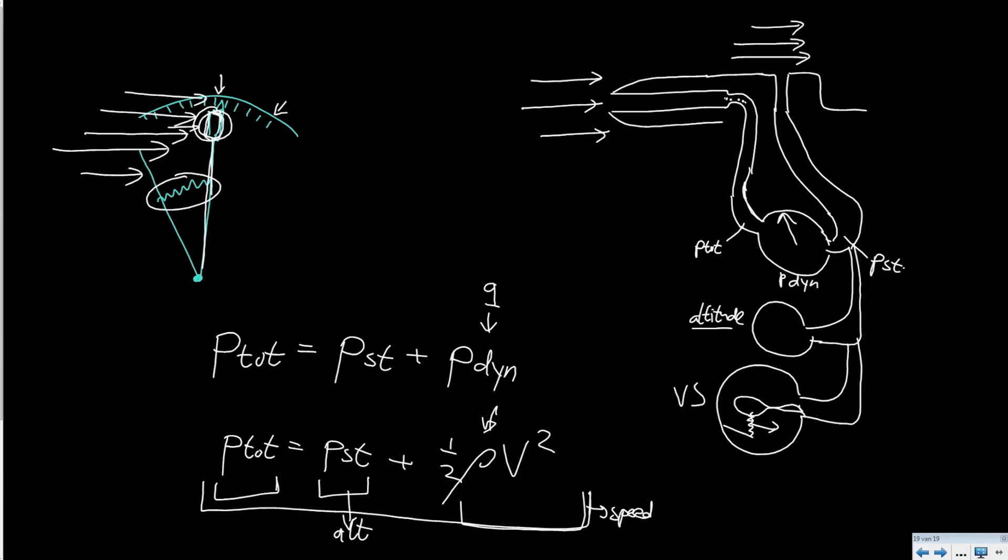So with one pitot tube you can measure a lot. But I said this half rho v squared is not just the airspeed but it also contains this air density. Well, the trick of the speed measurement is that we basically ignore this.